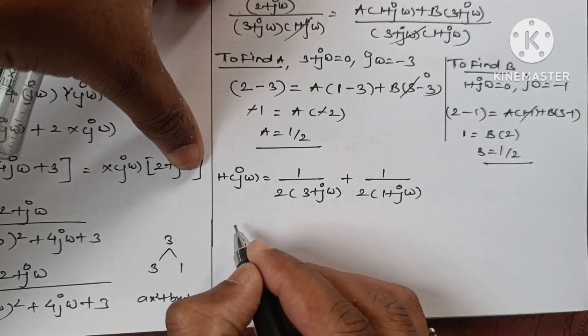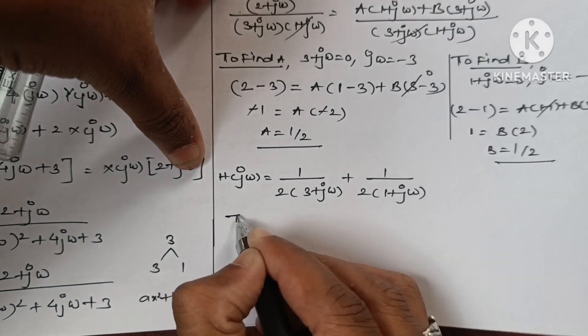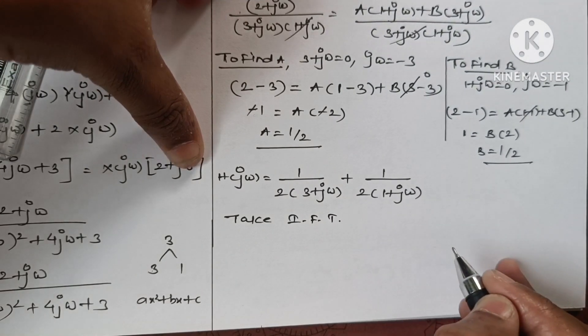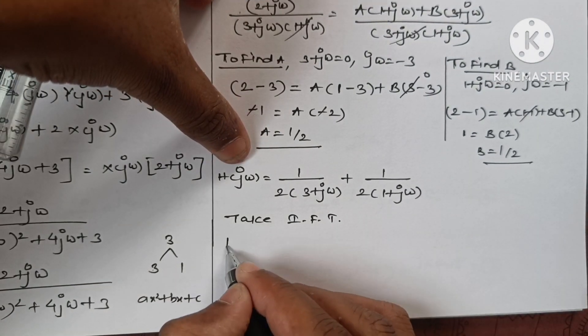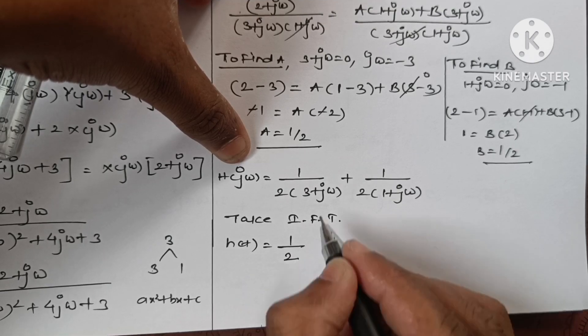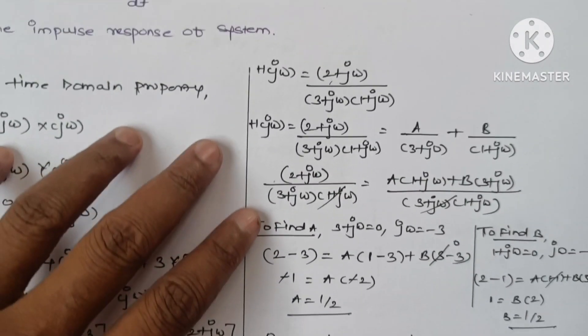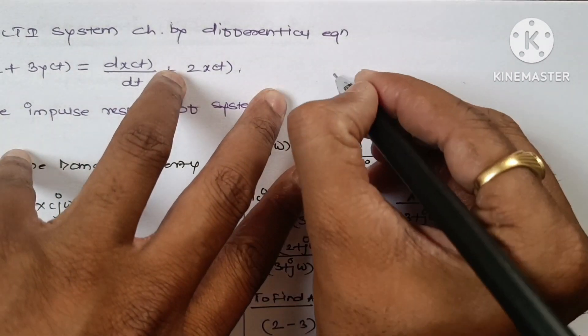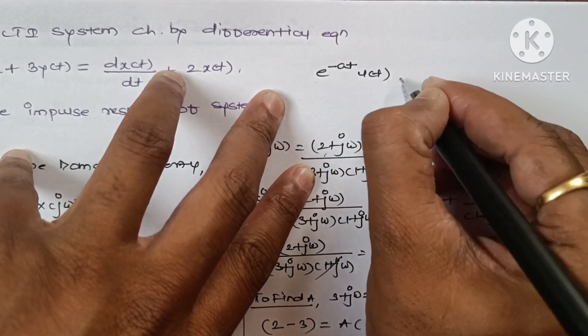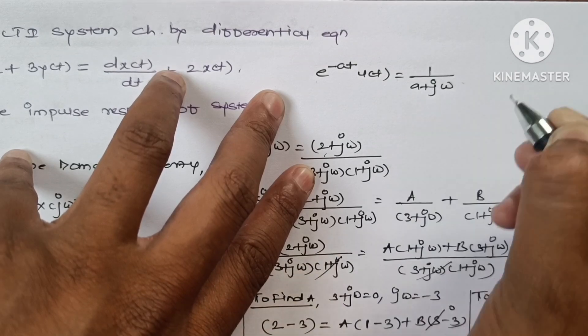To find impulse response in time domain, we take inverse Fourier transform. h(t) equals the inverse Fourier transform of h(jω). Using the property that e^(-at)u(t) has transform 1/(a + jω).